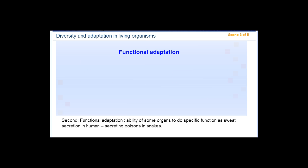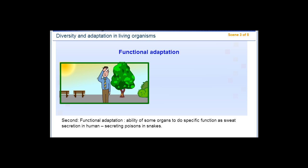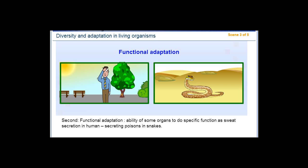Second, functional adaptation: the ability of some organs to perform specific functions, such as sweat secretion in humans or secreting poisons in snakes.